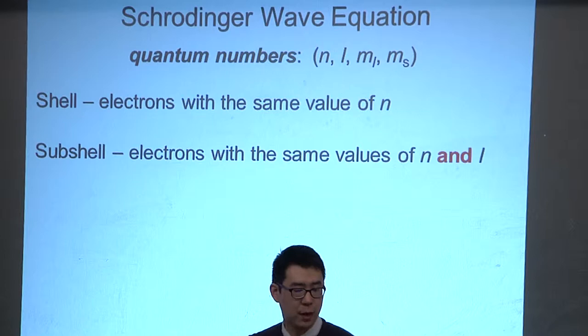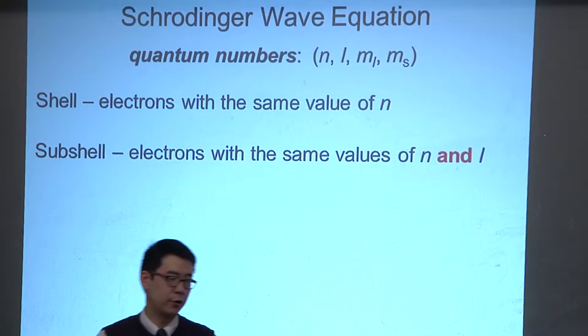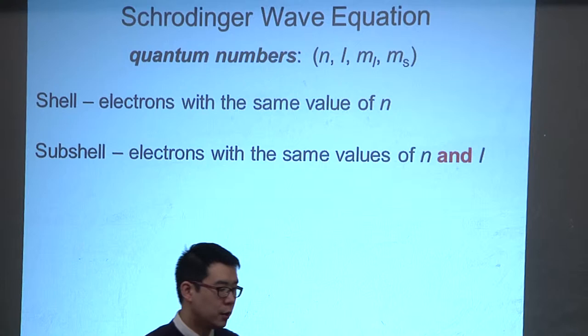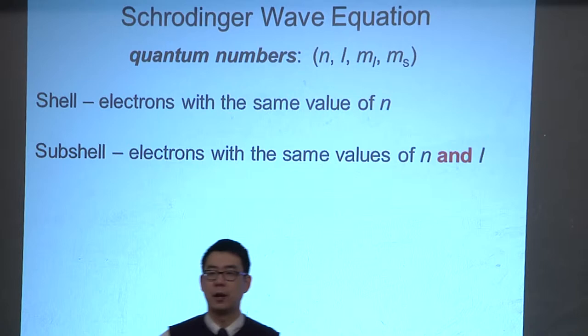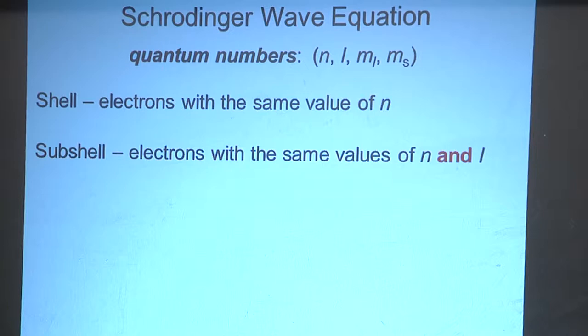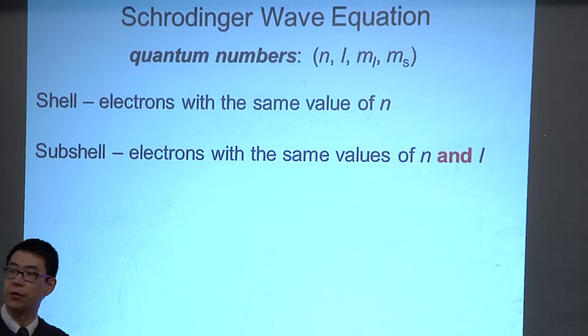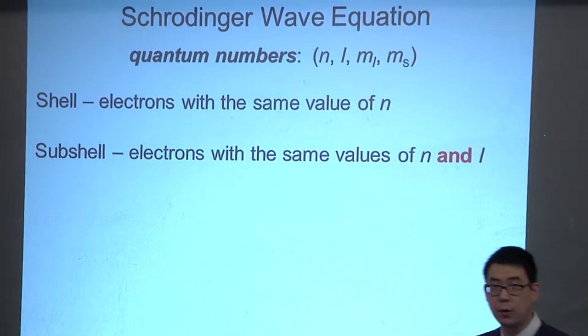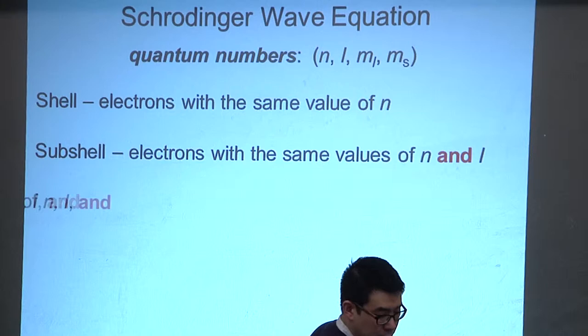Once you know n, you can start to think about l, called the angular momentum quantum number. l depends on n and can go from 0 up to n−1. So if n=1, l can only be 0. If n=2, l can be 0 or 1. If n=3, l can be 0, 1, or 2. Electrons with the same value of n and l are in the same subshell.